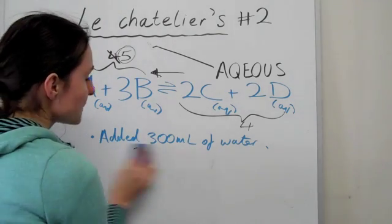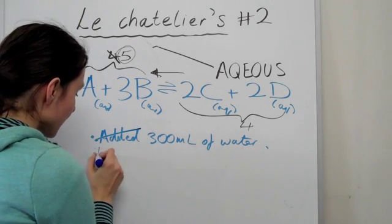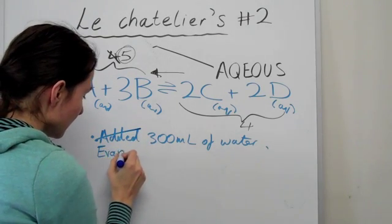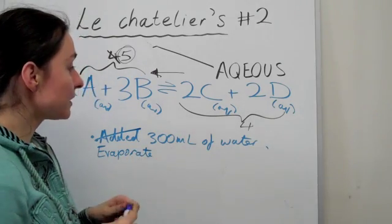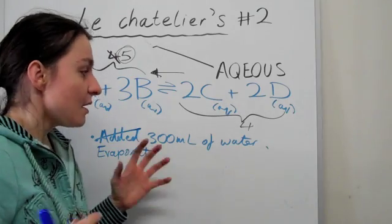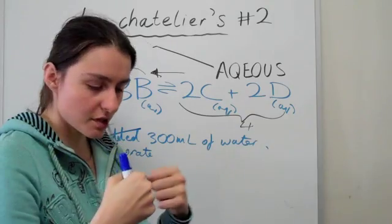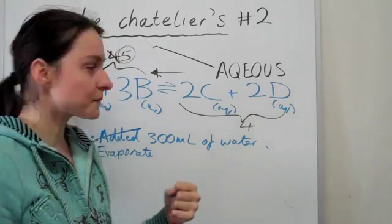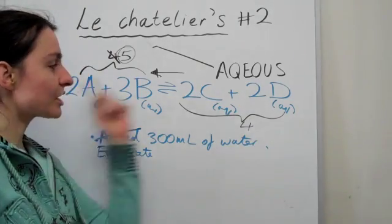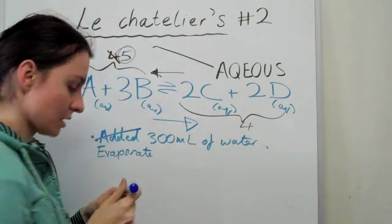Okay, and finally, if the opposite case happens, if you evaporate it, evaporated 300 ml of water, basically you have less water now. Now, the particles become closer together so you want to spread them out via Le Chatelier's principle and you go into the direction that is generating less particles and that's going forward in that case.